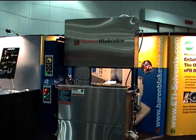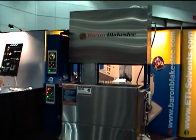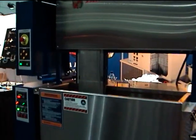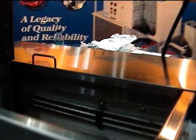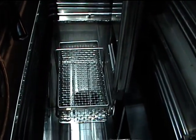This is the vapor degreaser, MLR 216, Baron Blakeslee. This is the automated hoist going down into the tank right now. See how it is an automated tank, automated hoist with a basket.